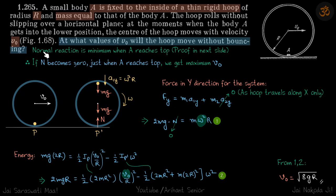Let's assume that the normal reaction is minimum when A reaches the top — we will prove this in the next part. When A is at the top, if the normal reaction becomes zero, that means at all other points the normal reaction will not be zero, so the hoop will never break contact. That is our approach.